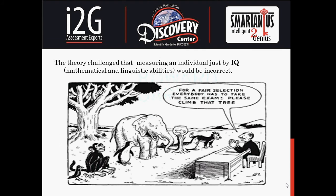In his book Frames of Mind, Gardner put forward his Theory of Multiple Intelligences, a theory that challenged the dominant definition of intelligence as limited to mathematical and linguistic abilities. Gardner theorized that rather than just these two intelligences, a grouping of eight intelligences more accurately accounts for the diversity of ways in which people acquire and utilize knowledge.